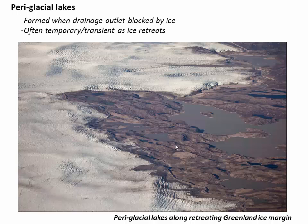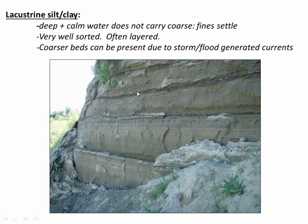Another type of deposit is lacustrine clays. These are often nicely bedded units of clay and silt deposited in very deep, calm water where coarser sediment can't be carried but fine clays can settle out. They're very well sorted, usually consisting of very fine sediments, though you can have some coarser beds.